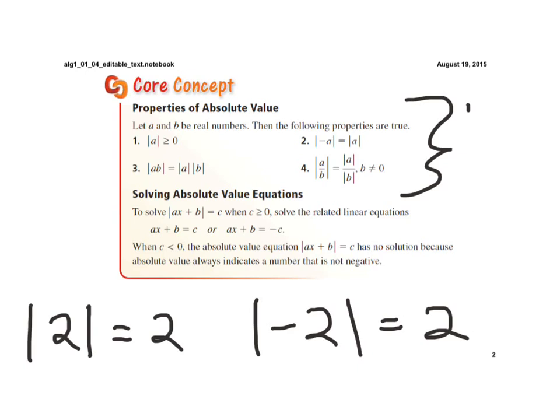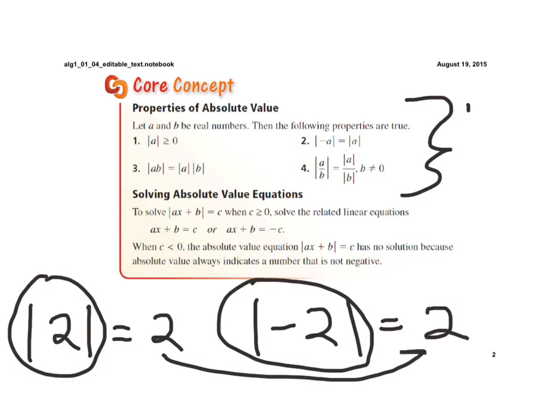Now a couple other properties: the absolute value of a negative a is equal to the absolute value of a. That just shows you the absolute value of a negative 2 was equal to the absolute value of a positive 2, because they're both equal to 2. And then properties 3 and 4 talk about if I have the absolute value of a times b, or if I take the absolute value of a times the absolute value of b, I would get the same result.